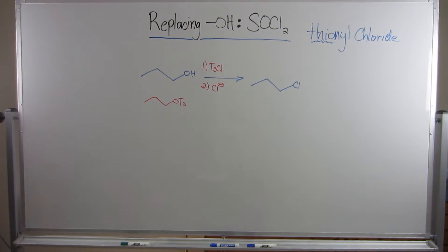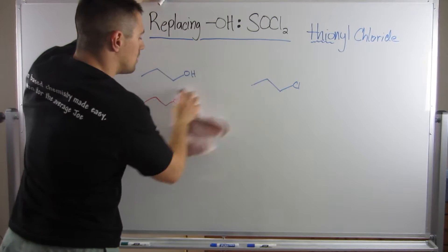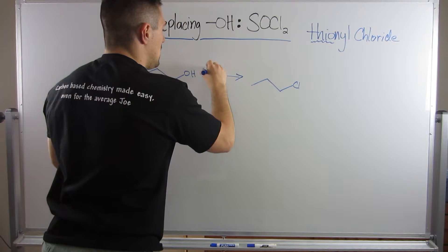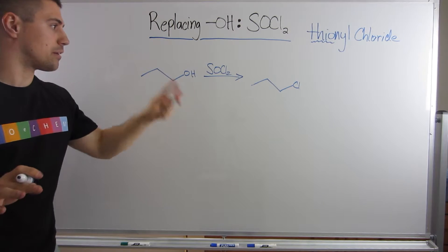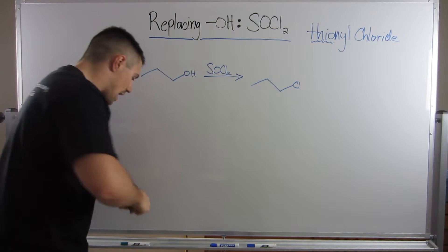However, now what I'm telling you is we don't need this two-step mess to get this done. What we can actually do is in one beautiful, sleek step, if you just throw in SOCl2, bam, you got your primary chlorine. So how does this work? Let's dive into that.